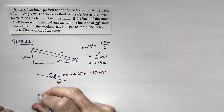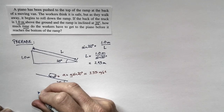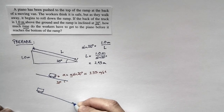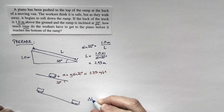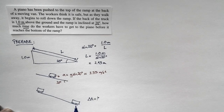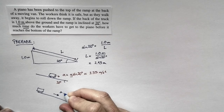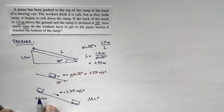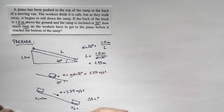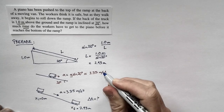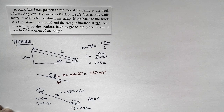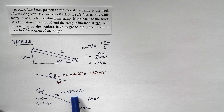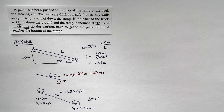We can find out by setting up a pictorial representation. The piano starts at the top of the ramp and finishes at the bottom. What we want to know is the time interval — how long does it take to get from its initial to its final position? In between, it's accelerating at 3.35 meters per second squared. The initial position is zero meters, with the x-axis moving along the ramp. The final position is 2.93 meters. The initial speed is zero meters per second, and the final speed we don't need to know.